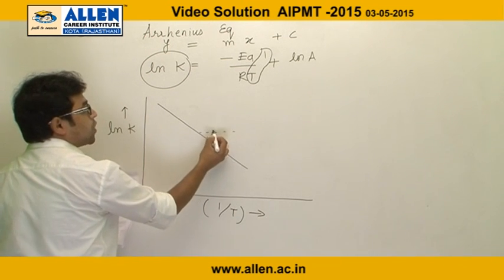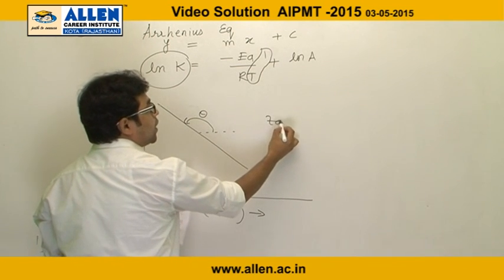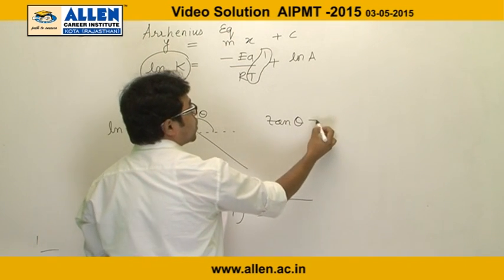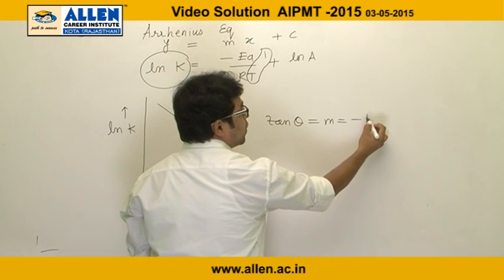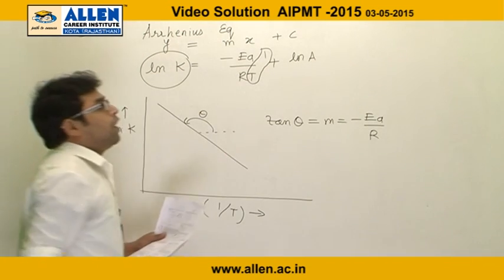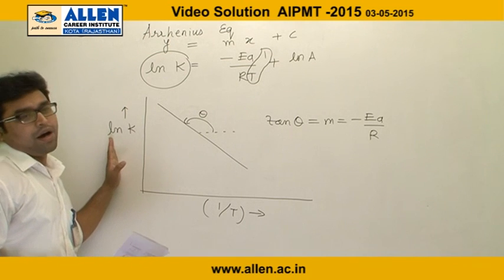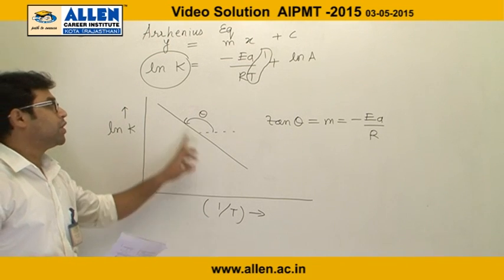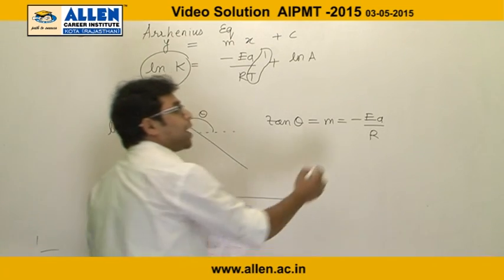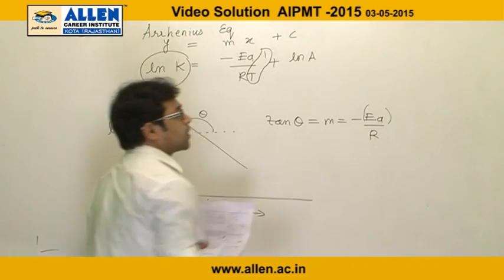If we find the slope — taking tan θ — the slope equals -Ea/R. So by plotting lnk versus 1/T and finding the slope, we can determine the activation energy.